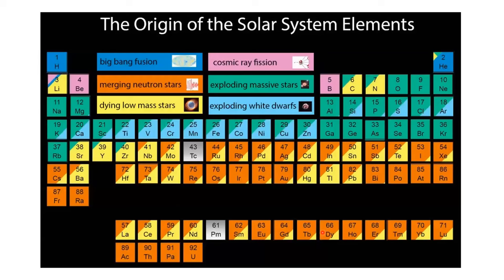Looking at where elements come from, we can use this table to see different origins. The Big Bang produced hydrogen, helium, and a little lithium — the extremely light elements. The rest are produced via different processes involving stars: merging neutron stars, dying low-mass stars, exploding white dwarfs, exploding massive stars. The table only goes up to 92 because uranium is our heaviest naturally occurring element. Everything past uranium — the transuranium elements — are the man-made ones, covering 93 through 118.